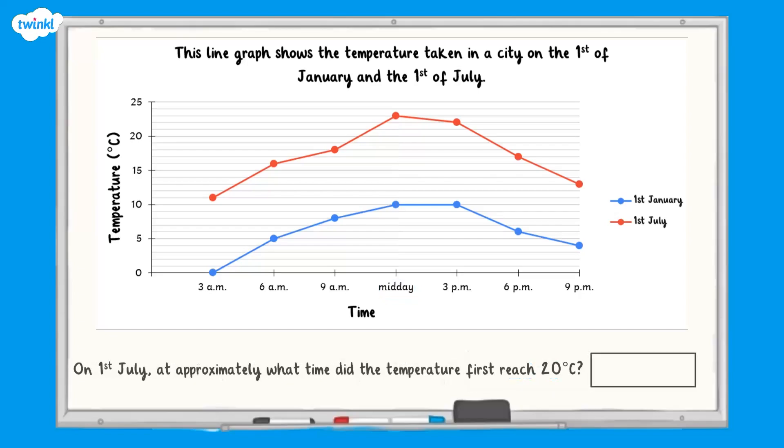We can also read data from the graph the other way around. On the 1st of July, at approximately what time did the temperature first reach 20 degrees? We can only find the approximate time and not the definite time because we don't know exactly what happened to the temperature between the points on the line.